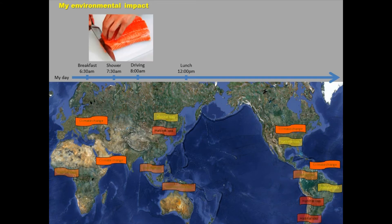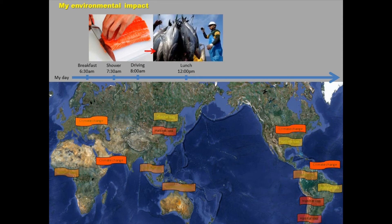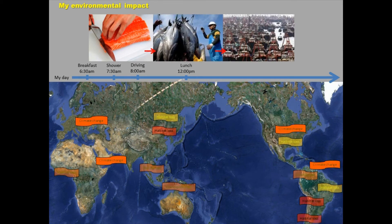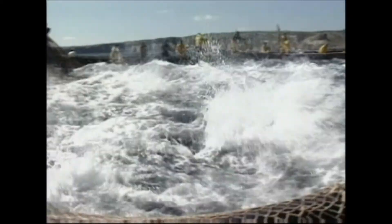Let's move on with our day and have lunch, and what I would like to exemplify here is the use of fish. Most of the fish that we see on our plates every day can come from countries in the Atlantic, the Indian and Pacific Ocean.